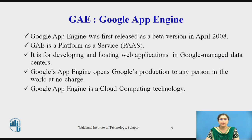As an introduction, Google App Engine was first released as a beta version in April 2008. The Google App Engine is a Platform as a Service, that is PaaS. It is for developing and hosting web applications in Google-managed data centers. The Google App Engine opens Google's production to any person in the world at no charge.